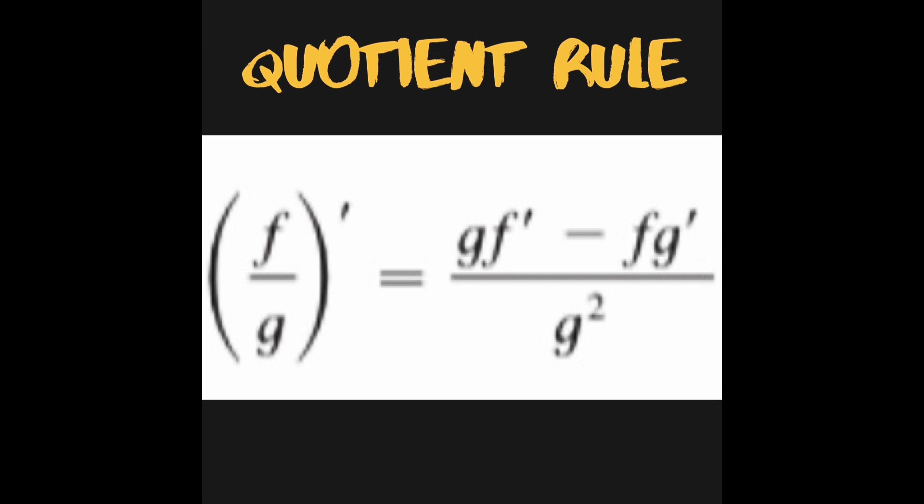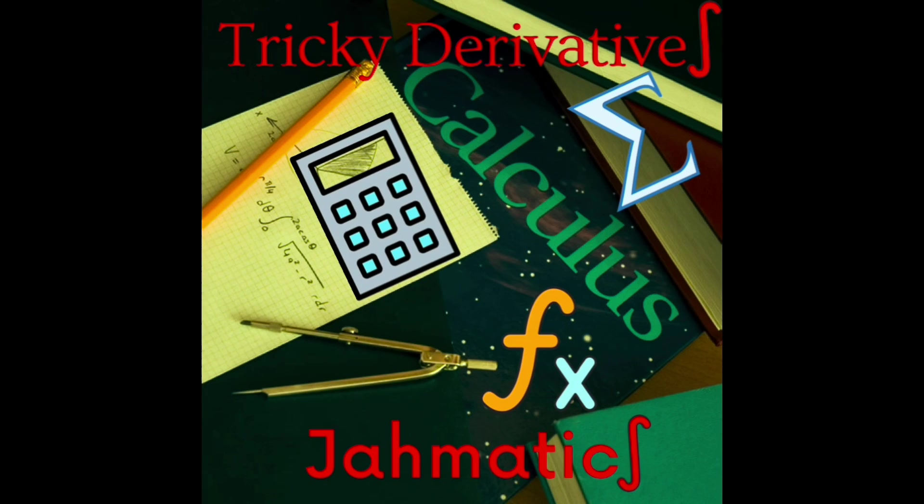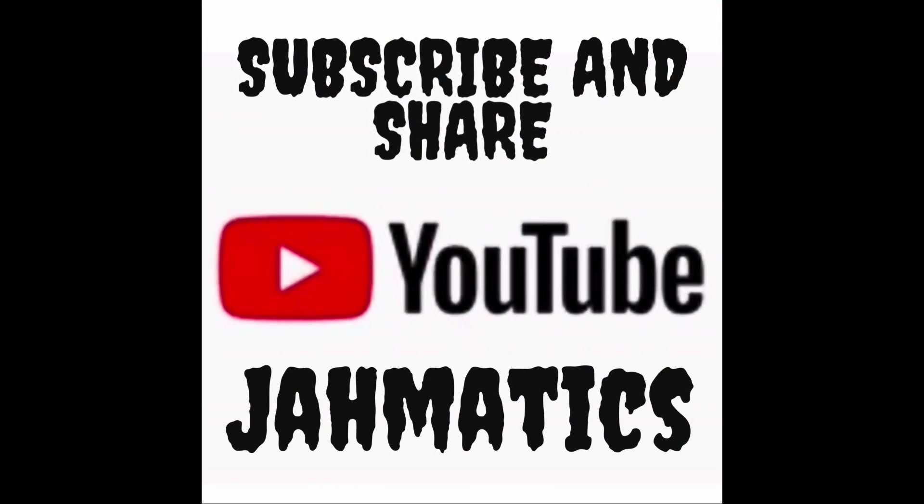Derivative of f over g is g times derivative of f minus f times derivative of g, all over g squared. Quotient rule. Derivative of f over g is g times derivative of f minus f times derivative of g, all over g squared. Wow!